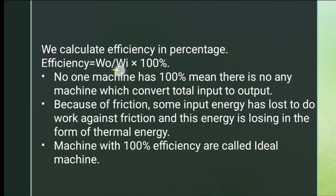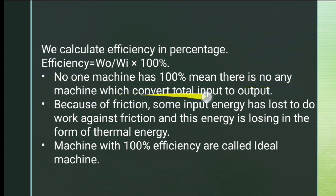We can calculate efficiency as a percentage: Efficiency (η) = (W_output / W_input) × 100%. No real machine has 100% efficiency — there is no machine that can convert total input energy completely into useful output. Some energy is always lost.